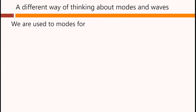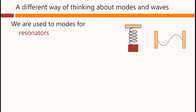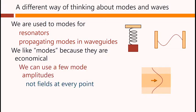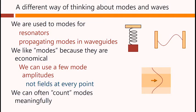We are used to modes for resonators, such as a mass on a spring resonator or a standing wave resonator, and for propagating modes in waveguides. We like modes because they are economical. We can use a few mode amplitudes, not fields at every point, and we can often count modes meaningfully.